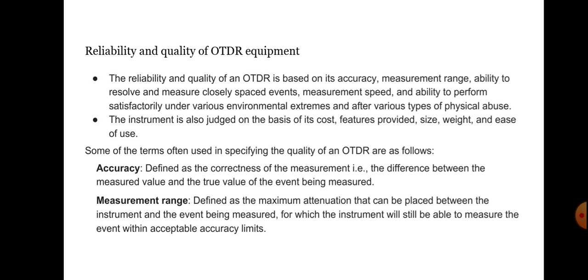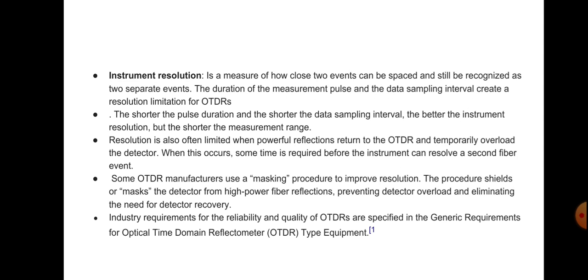The instrument is also judged on the basis of cost, features provided, size, weight, and ease of use. Accuracy is defined as the correctness of the measurement — the difference between the measured value and the true value of the event being measured. Measurement range is defined as the maximum attenuation that can be placed between the instrument and the event being measured for which the instrument will still be able to measure the event within acceptable accuracy limits. Instrument resolution is a measure of how close two events can be spaced and still be recognized as two separate events.